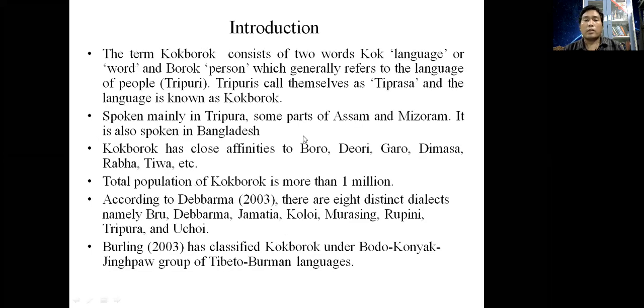Introduction. The term Kokhbarok consists of two words: Kokh language or word, and Barok person, which generally refers to the language of people, Tripuri. Tripuris call themselves Triprasa and the language is known as Kokhbarok. It is spoken mainly in Tripura and some parts of Assam and Mizoram. It is also spoken in Bangladesh.